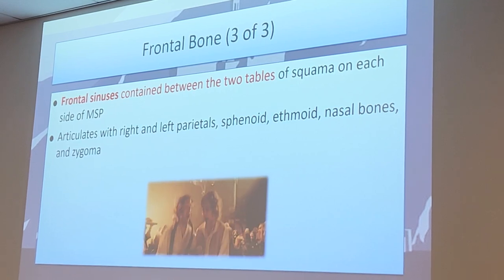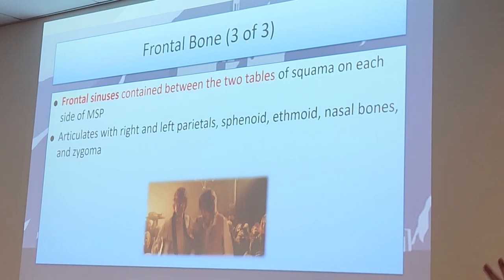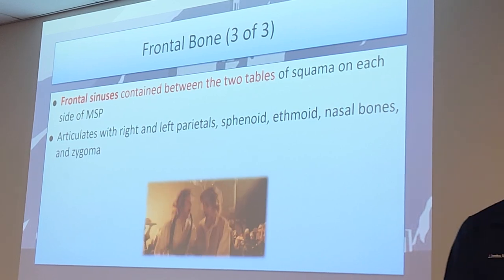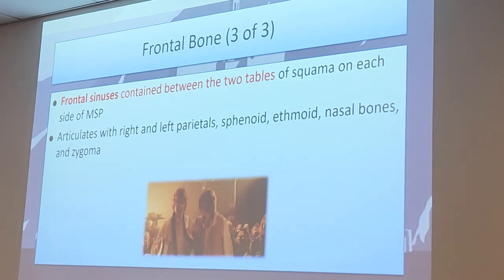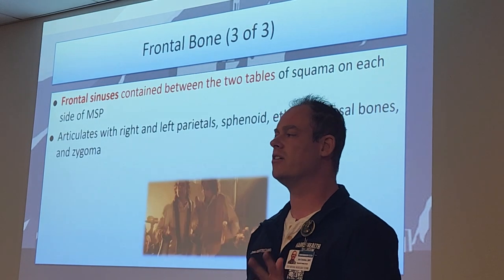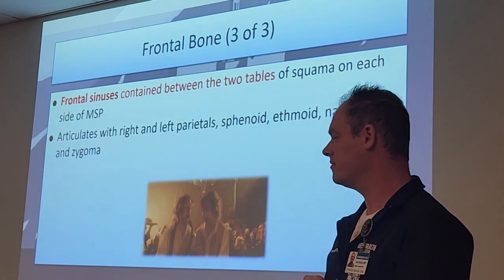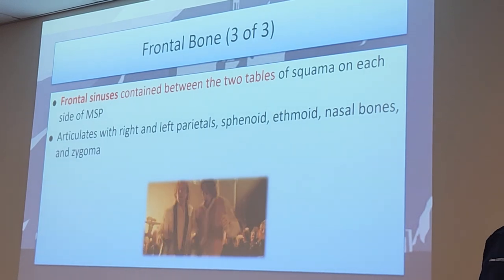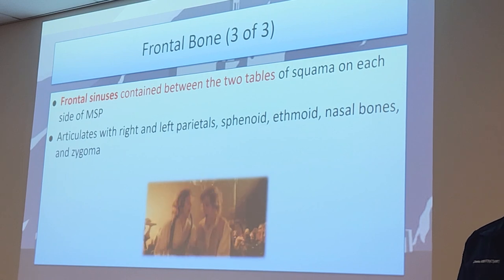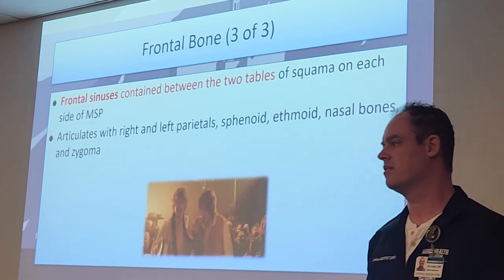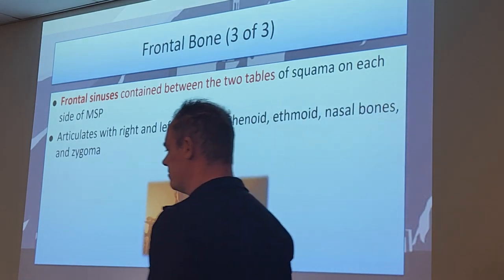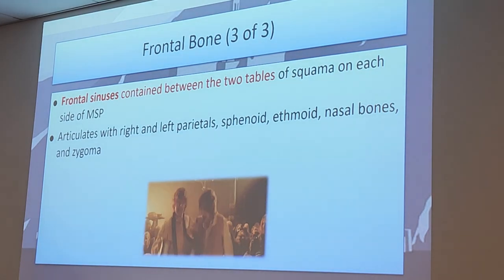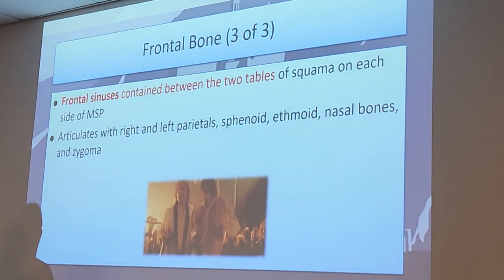What does the frontal bone articulate with? Each of these bones have articulation points we need to know. The frontal bone articulates with quite a bit: the right and left parietals, the sphenoid, the ethmoid, the nasal bones, and the zygoma - left and right. Those are two facial bones it articulates with. Remember, the sphenoid bone articulates with all, so you can always guarantee sphenoid will be in your answer choices for cranial bones - it's that anchor in the middle holding them all together.